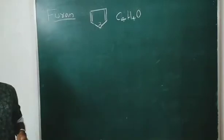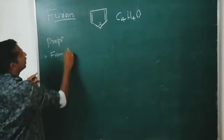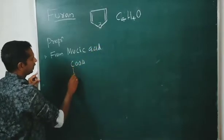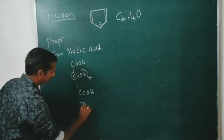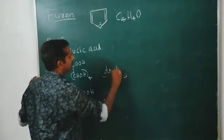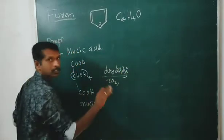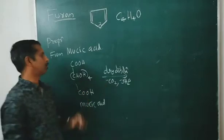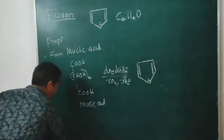Preparation of furan. First method: from mucic acid. The structure of mucic acid is COH, (CHOH)4, COH. On dry distillation of mucic acid, minus CO2 and minus three molecules of water are eliminated, and we get furan. This is the first method.